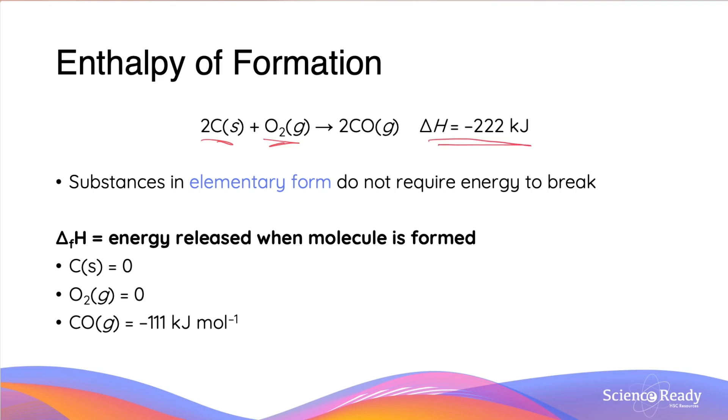So if the delta H is negative 222 kJ, then all of it must come from the formation of CO, carbon monoxide.